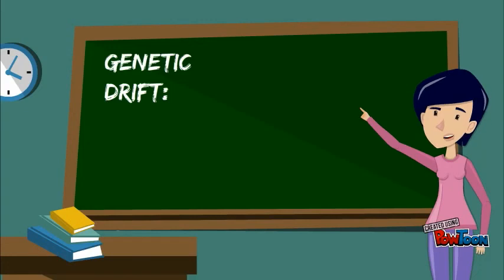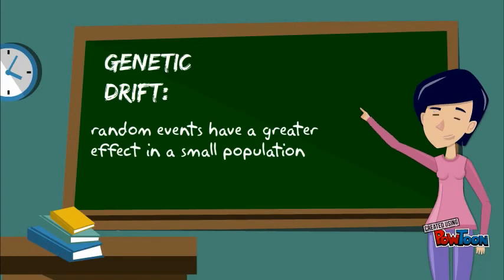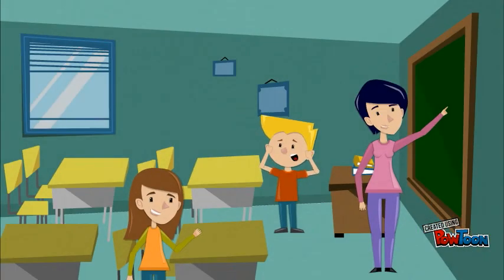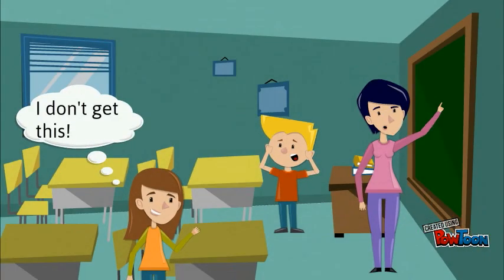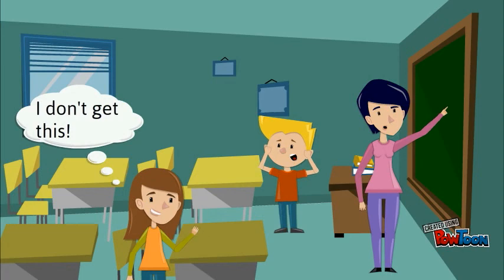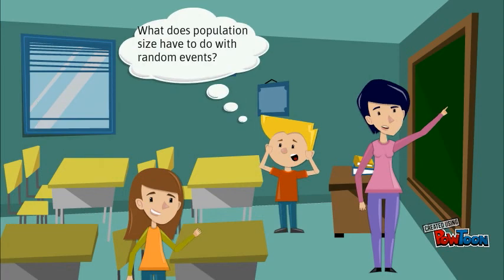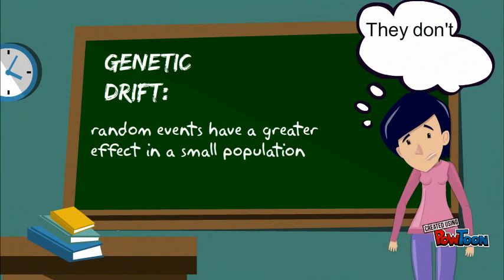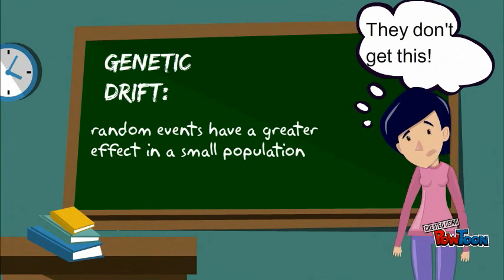Genetic drift refers to the fact that a random event is more likely to change gene frequencies in a small population. This changes evolution. Have you ever wondered why it would be more likely to affect a small population?